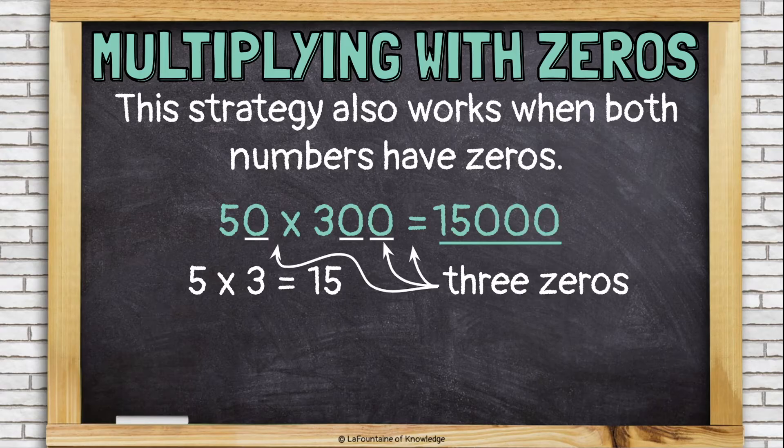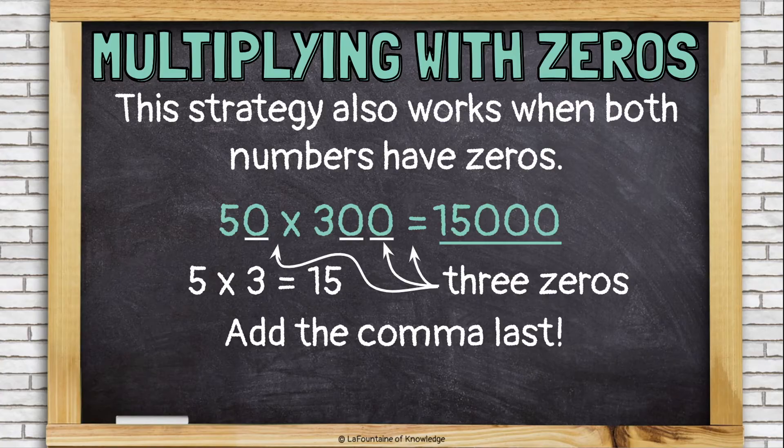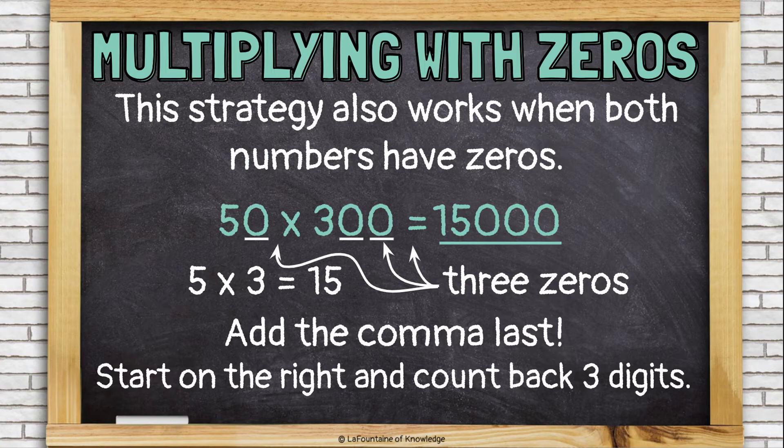That makes the number 15,000, but it's missing a comma. I always like to add the comma last, and a good strategy for that is to start on the right and count back three digits. That's where the comma goes. Now it looks like 15,000.